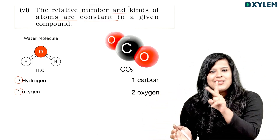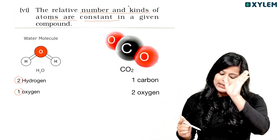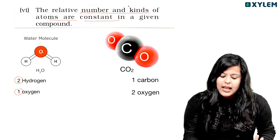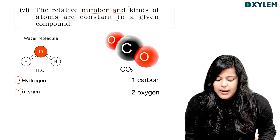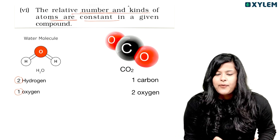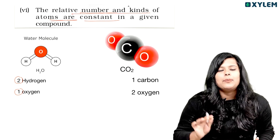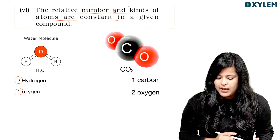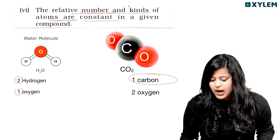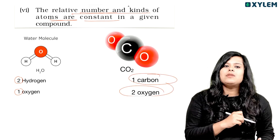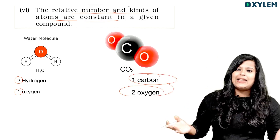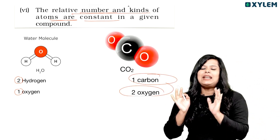Two hydrogen and one oxygen — that is the formula for water. The relative number and kind of atoms are constant. For carbon dioxide, two oxygen atoms combine with one carbon — the same ratio always.